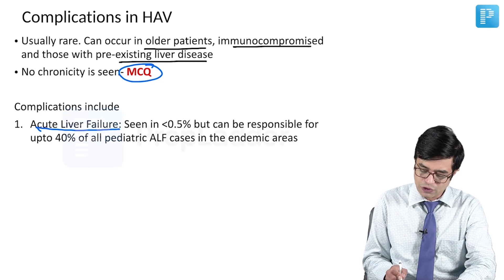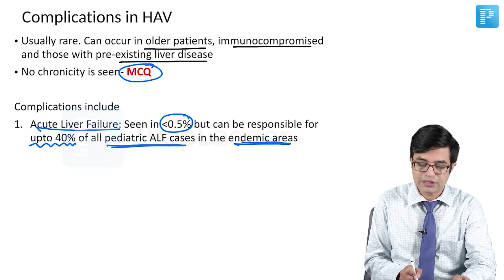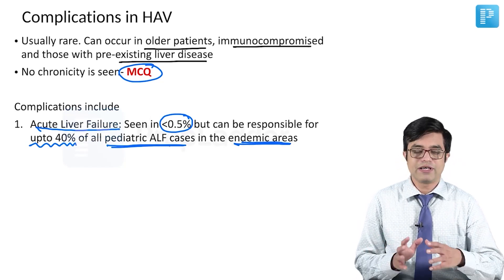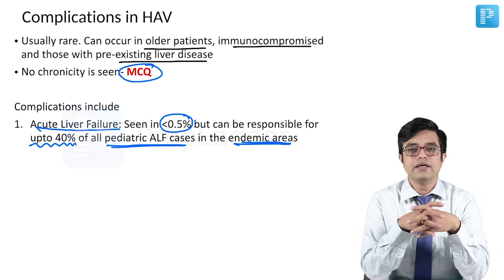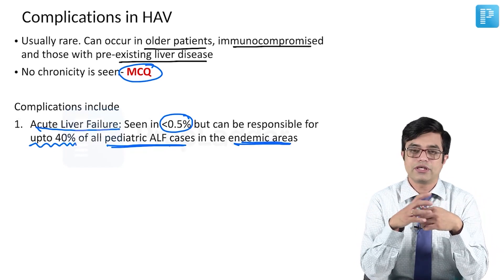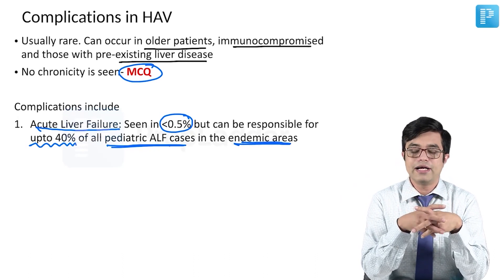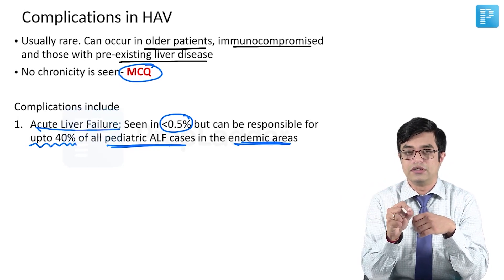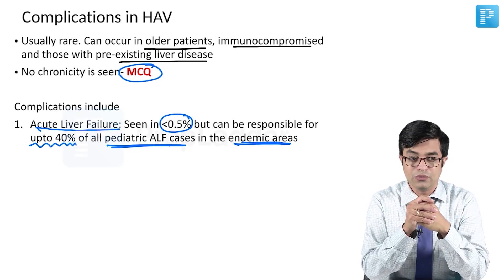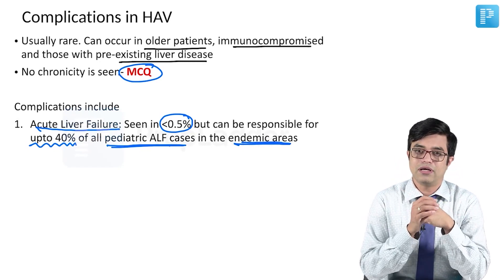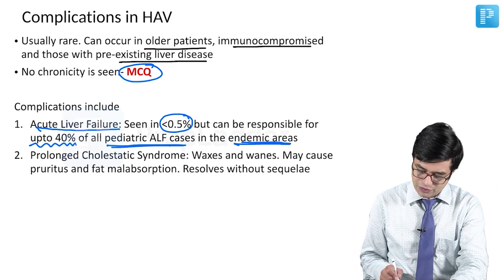The first complication is acute liver failure. It is overall very rare — 0.5%. But if you look at pediatric acute liver failure cases in endemic areas, HAV will be found in up to 40% of cases. So if you collect 100 patients of acute liver failure in children in endemic areas, 40 out of 100 will be your Hepatitis A virus patients. That is why you need to follow up these patients, looking specially at prothrombin time for any complications.